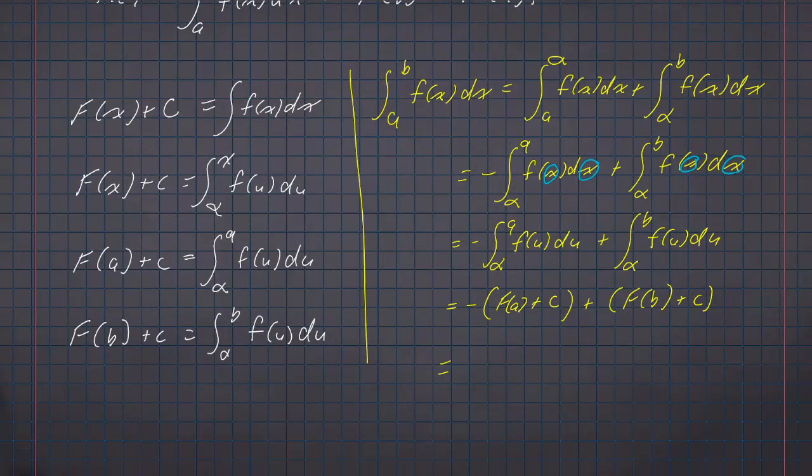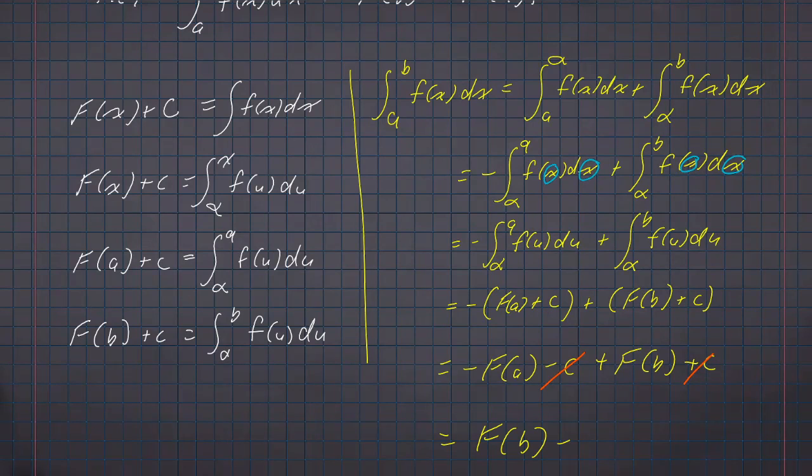And then it's just some simple algebra to see that we have a minus c and a plus c that cancel each other out. And if I rearrange terms so it's written as subtraction instead of addition, this is F(b) minus F(a). There we go.